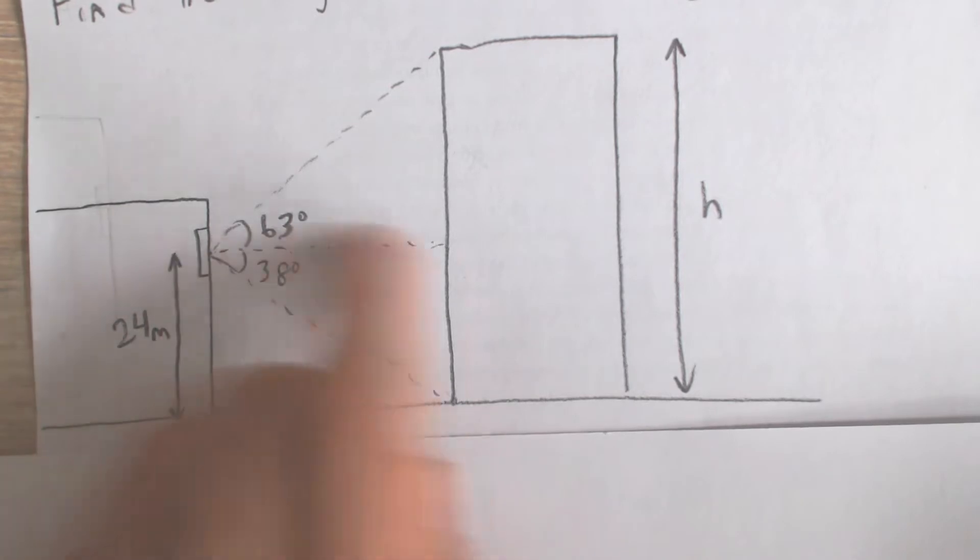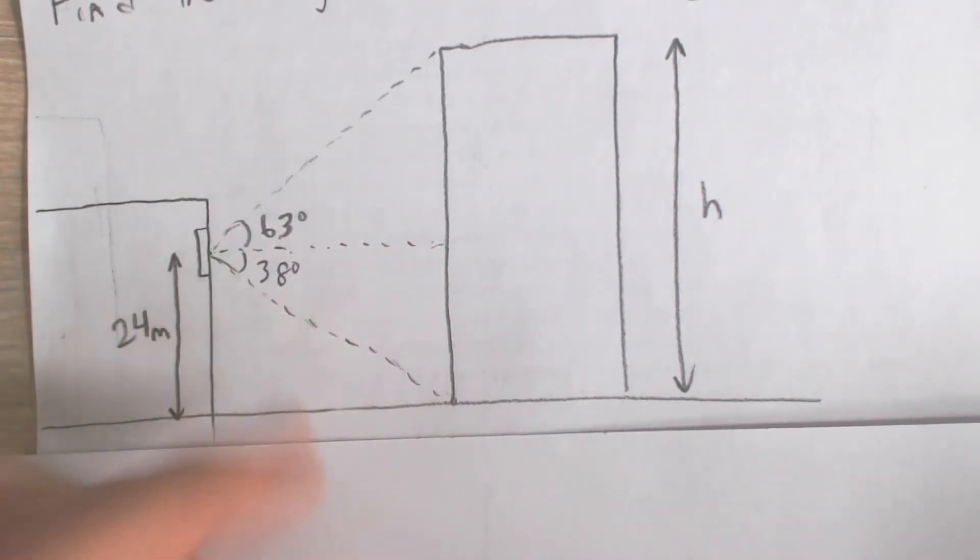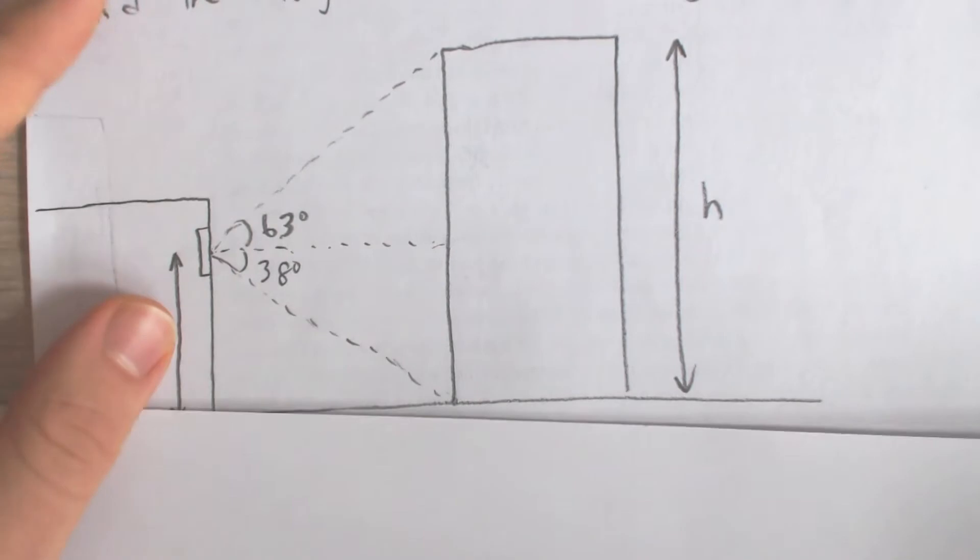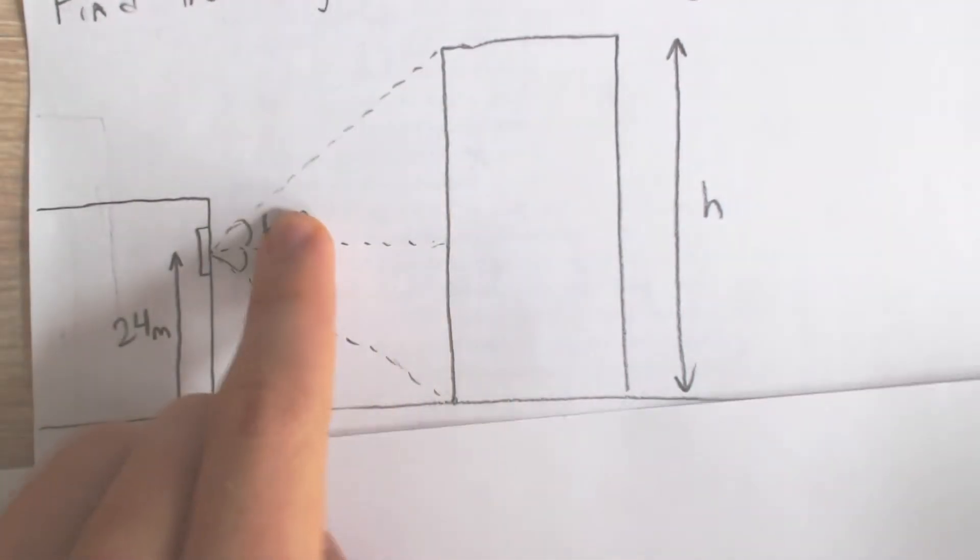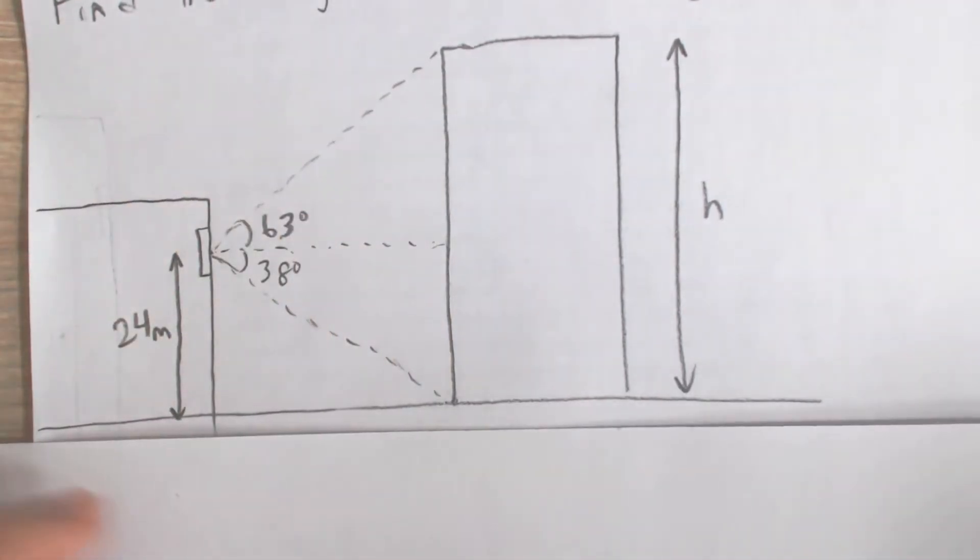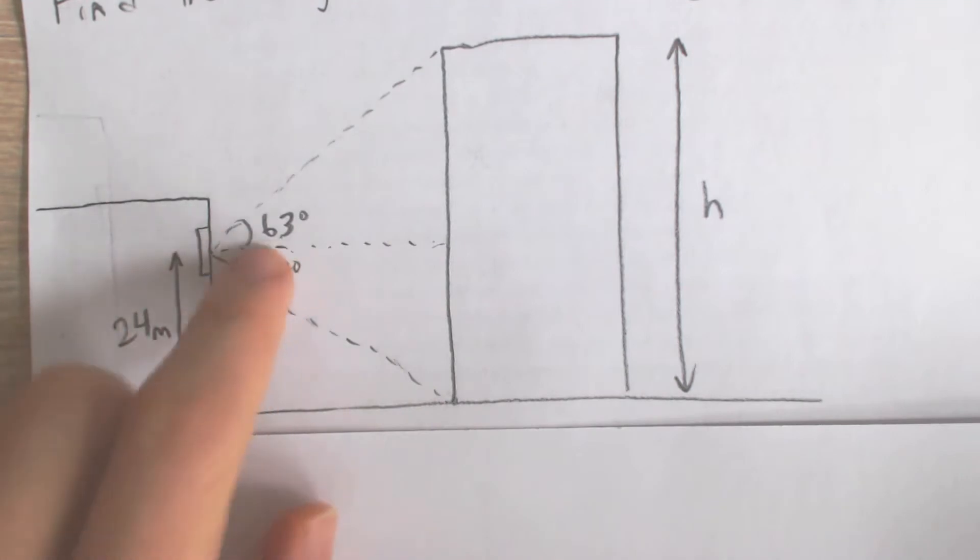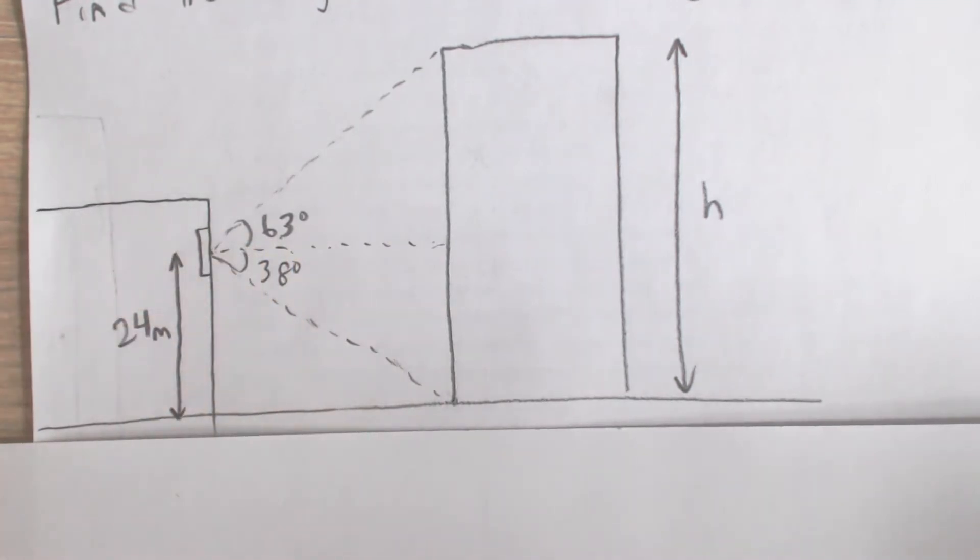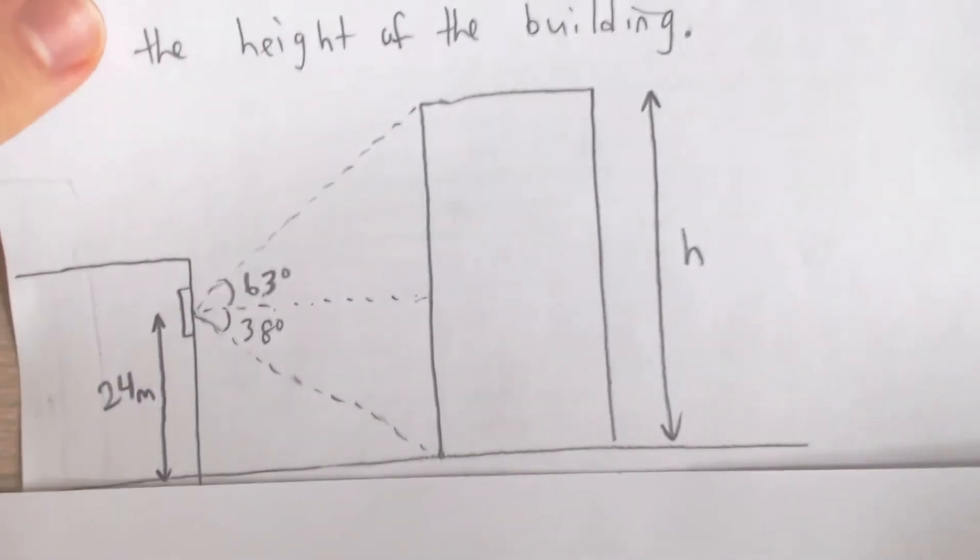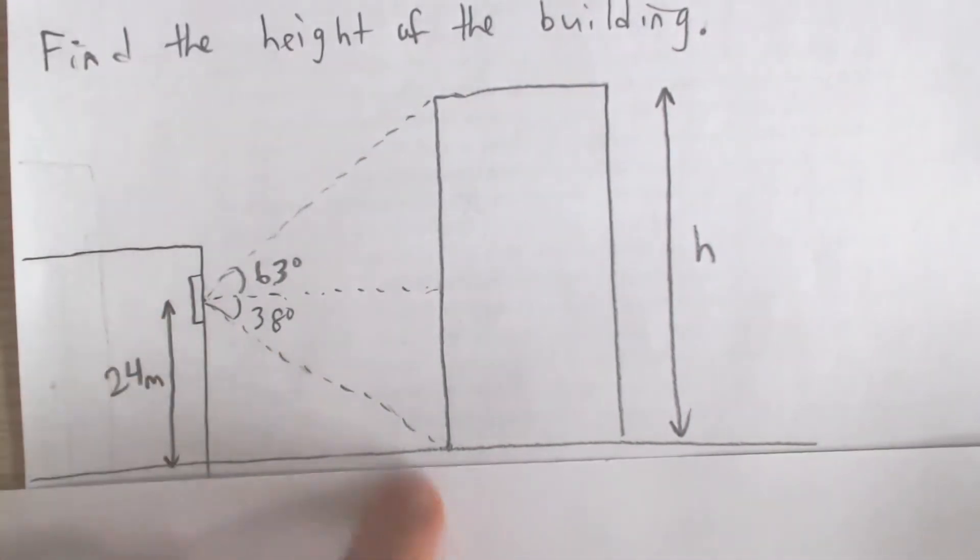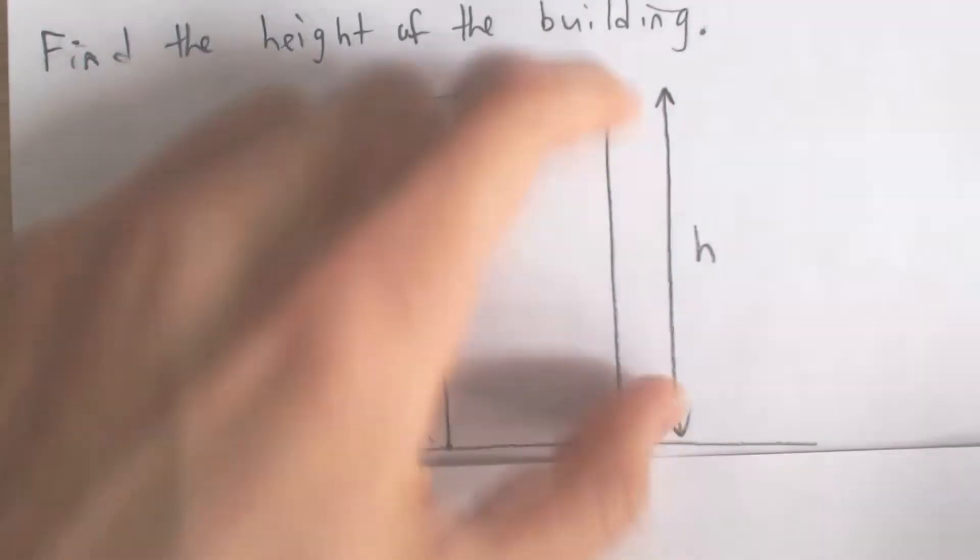The angle of elevation going upwards to the top of the building—we draw an imaginary line to the top of the building from the horizontal—the angle between that is 63 degrees. What we have to do is find the height of the building, in other words, the distance from here to here, where I drew it out here.